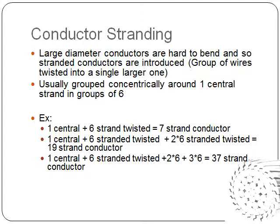If you need another layer, you add two times six, which is twelve, plus the original seven, which makes nineteen. And if you want another layer after that, you add eighteen strands, giving you a thirty-seven strand conductor, and so on as it continues.